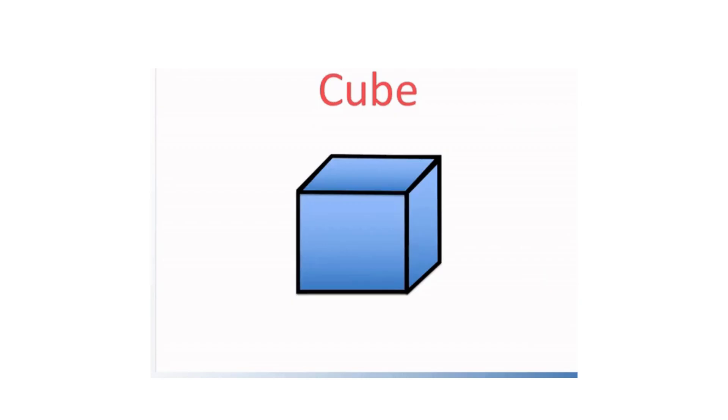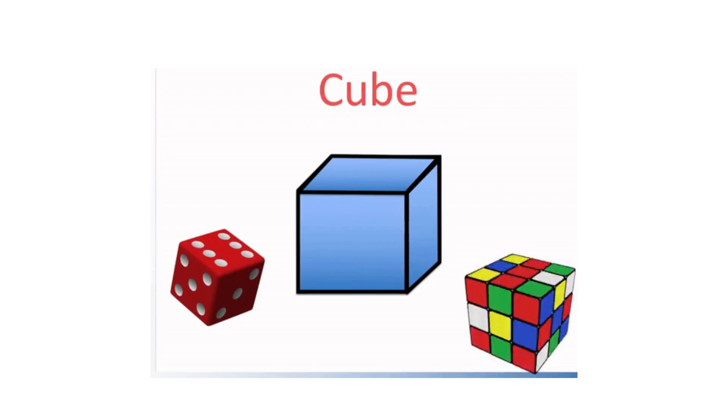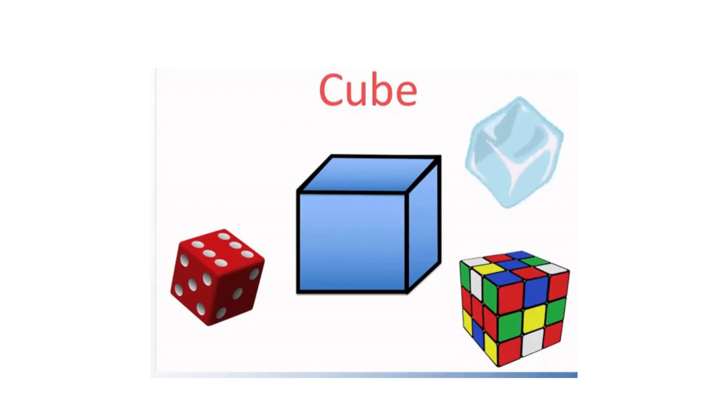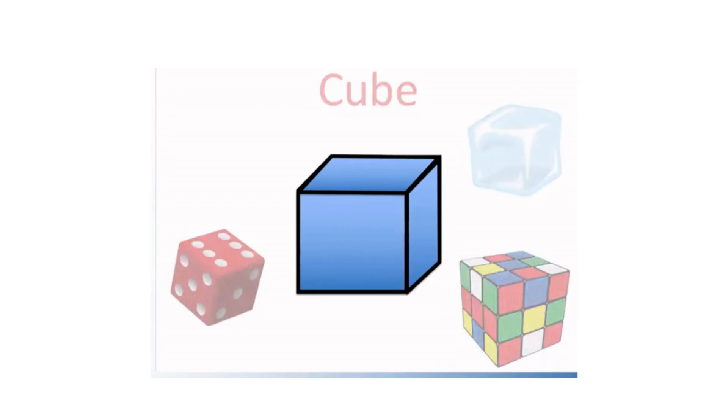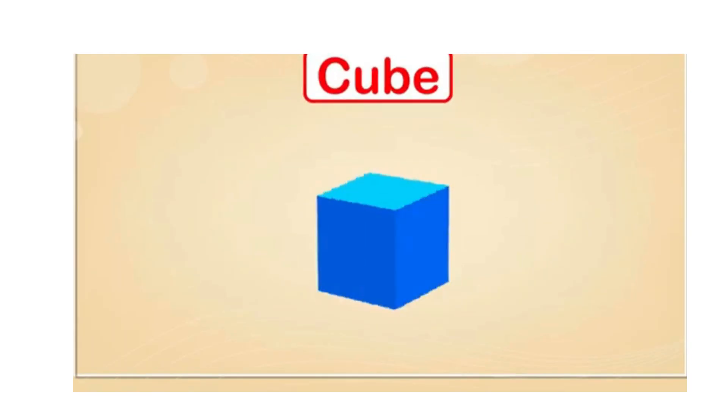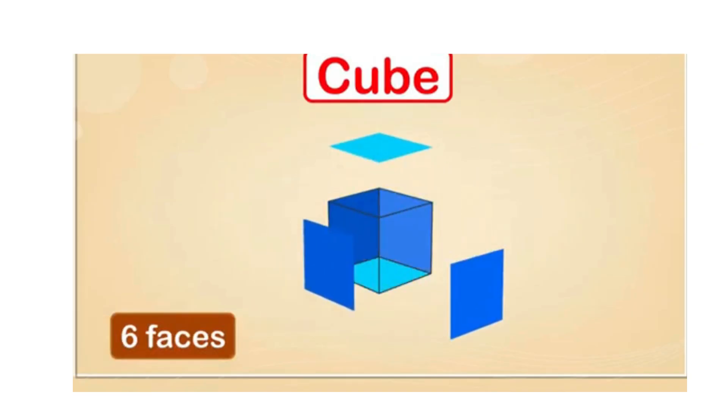Now comes to the next 3D shape, cube. Some other forms of cube are dice, color-matching cube, and ice. Let's move on to our next prism, the cube. The 6 identical faces of the cube make it a special rectangular prism.